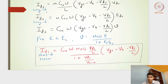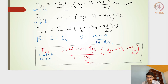The long channel current equation for linear mode is: mu * Cox * (W/L) * (Vgs - Vt - Vds/2) * Vds. For the saturation current it is: mu * Cox * (W/L) * (Vgs - Vt)^2 / 2.